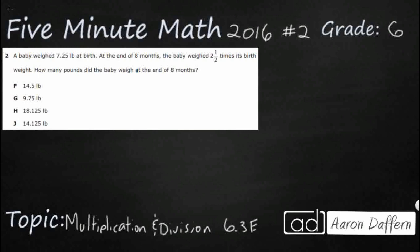So we have a baby that weighs 7.25 or 7 and 25 hundredths pounds at birth, and at the end of 8 months the baby weighs 2 and a half times more. How many pounds did the baby weigh at the end of 8 months? Looks like a basic multiplication problem until you really write it out, and you are thinking 7.25 times 2 and a half. It is kind of hard to multiply a fraction and a decimal. So we have got some options here.